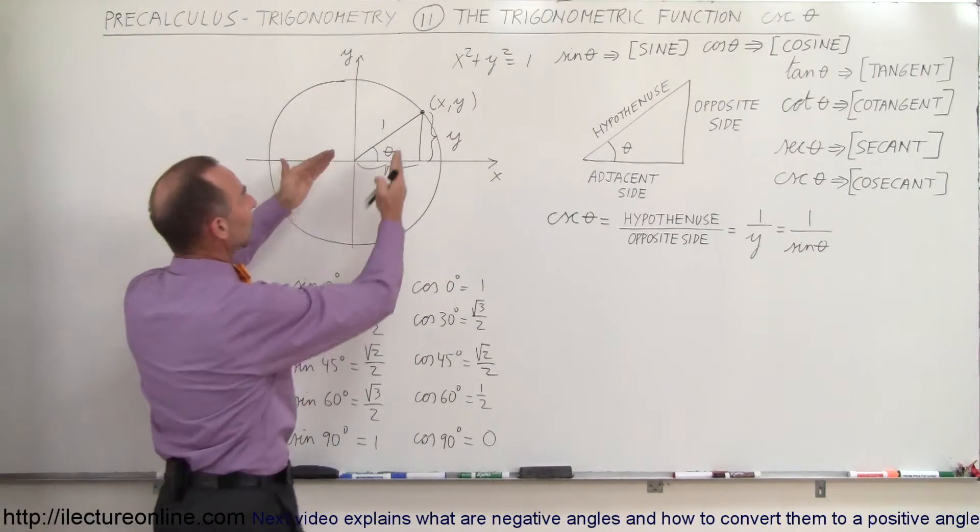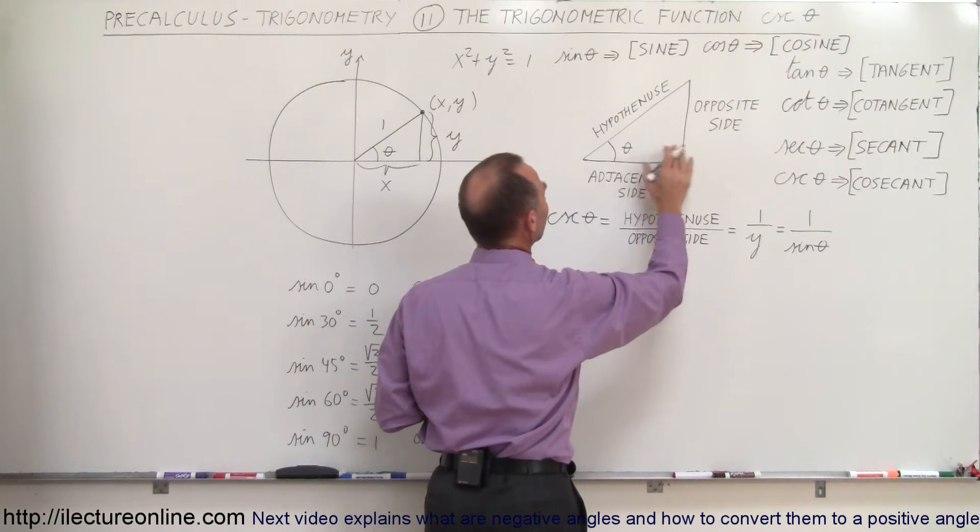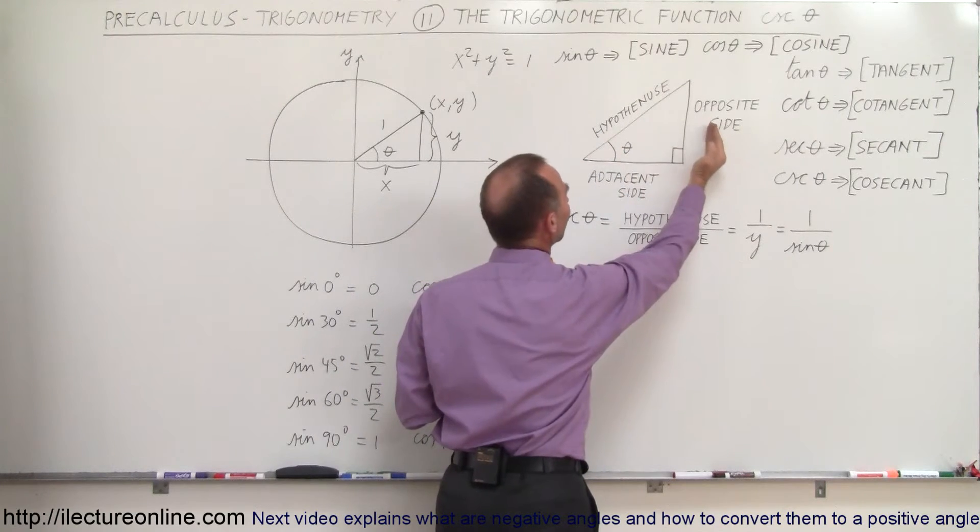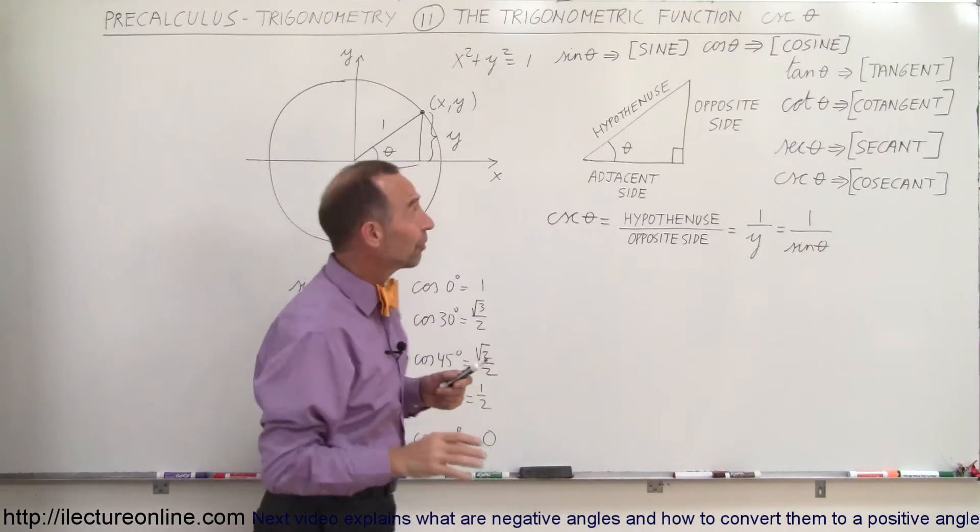Now when we take this triangle right here and place it over here, notice that this is the right angle right here. We can see that this is called the hypotenuse, this is the opposite side to the angle, and this is the adjacent side to the angle.